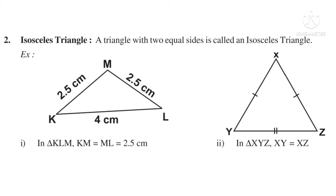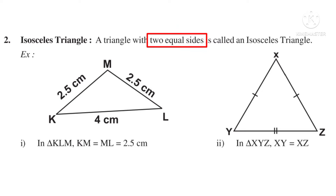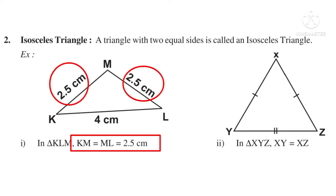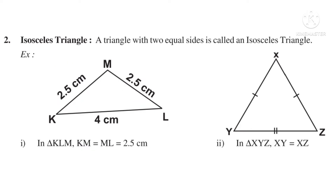Number 2: Isosceles Triangle. Observe — the word 'iso' means equal. An isosceles triangle is a triangle with two equal sides. For example, in triangle KLM, KM = ML = 2.5 cm — equal length — so it is called an isosceles triangle. In triangle XYZ, XY = XZ. Both are represented by the same number of strokes, so two sides are of equal length — so again, an isosceles triangle.